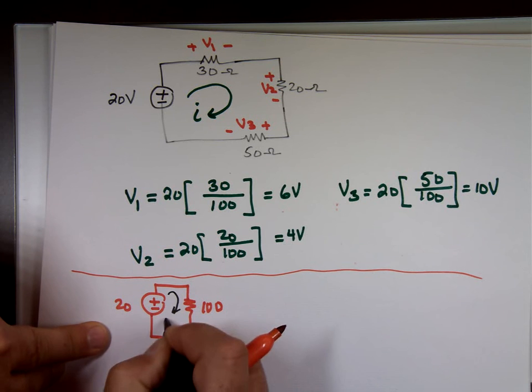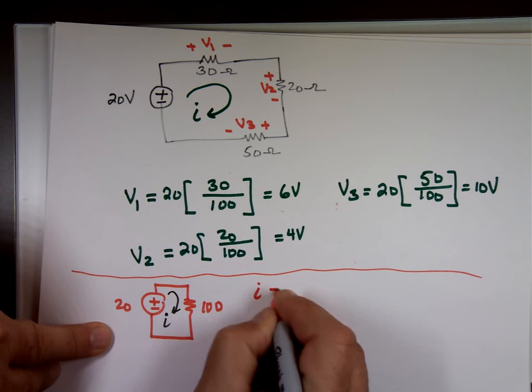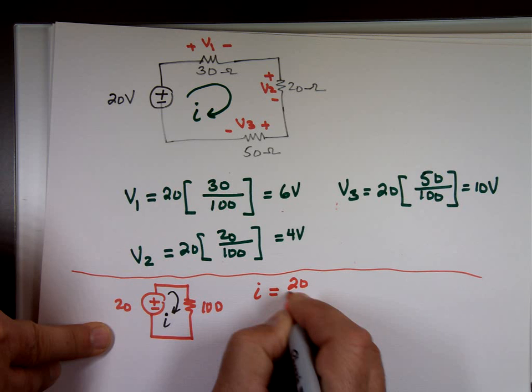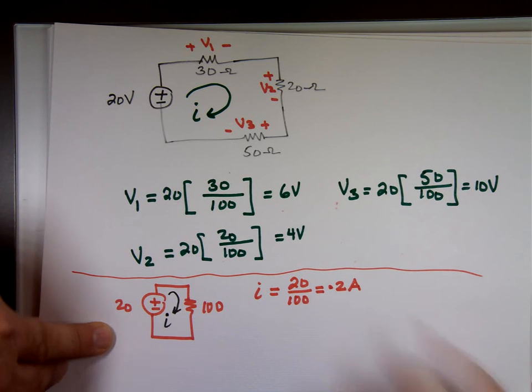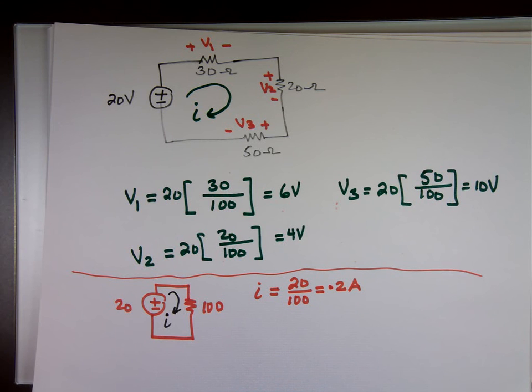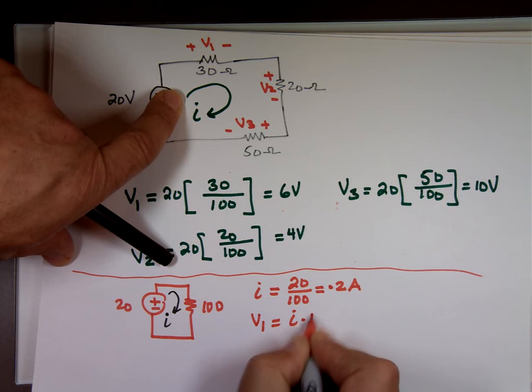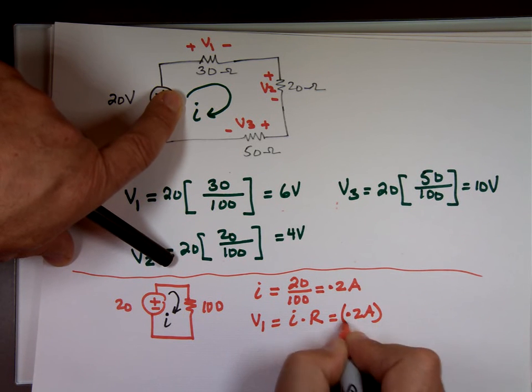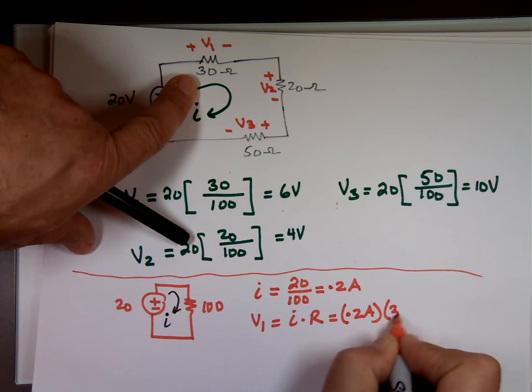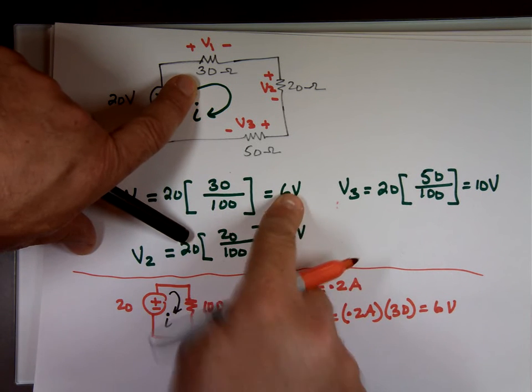I is going to be V divided by R. What's that? 0.2 amps. Well, that's equivalent to that. That means V1, Ohm's law, V equals I times R. 0.2 amps times 30. What do we have? 6 volts. Is that the same answer as this? V2, I times R. 0.2 amps times 20. That's 4 volts. That matches.